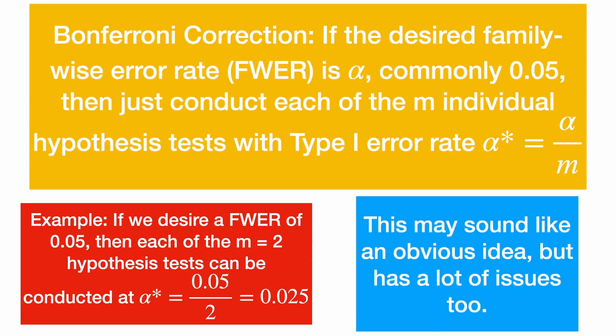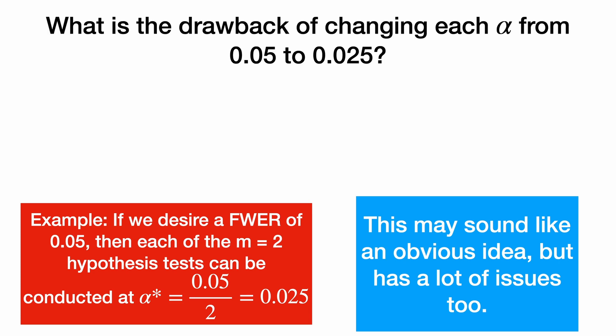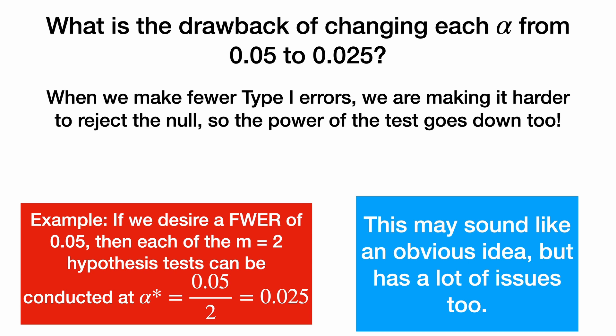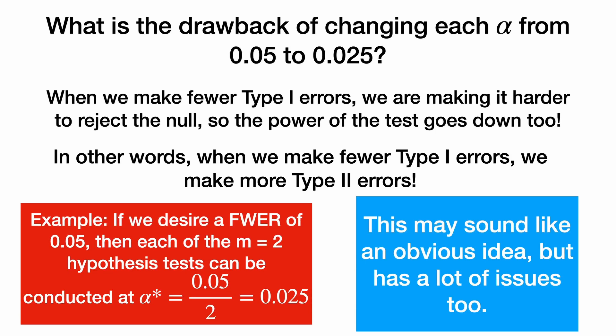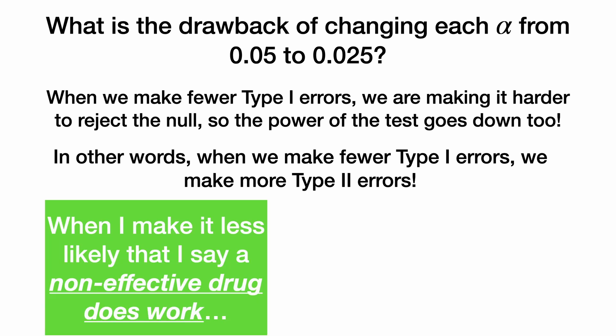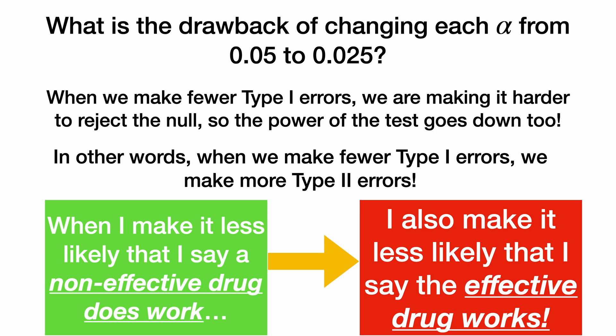This may sound like an obvious idea, but it also has a lot of issues. What is the drawback of changing each alpha from 0.05 to 0.025? When we make fewer type 1 errors, we are making it harder to reject the null, so the power of the test goes down too. In other words, when we make fewer type 1 errors, we make more type 2 errors. So when I make it less likely that I say a non-effective drug does work — which is good — I also make it less likely that I say the effective drug works, which is bad.